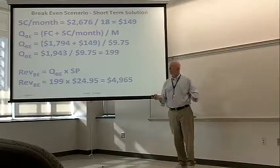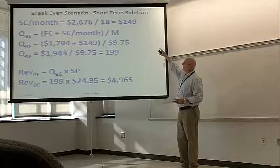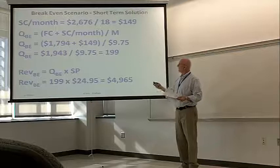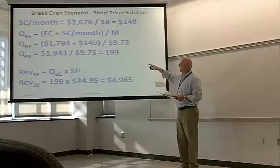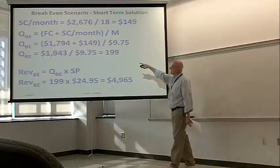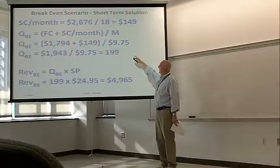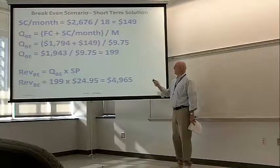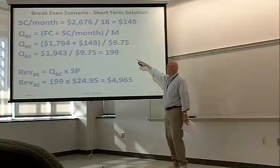Short-term, where we have to make up for the start-up costs, it's the $149 a month that we're going to allocate the starting costs. $26.76 divided by $18. Just add the start-up cost per month in, so it's $17.94 plus $149 divided by $9.75. And now the break-even quantity, short-term, for 18 months comes out to 199 items.